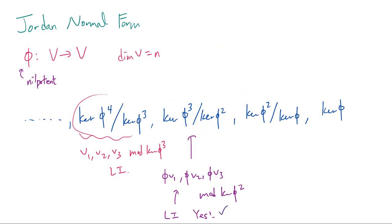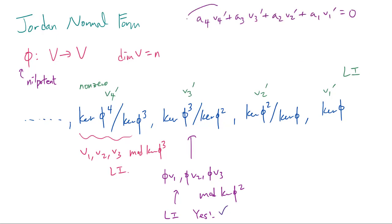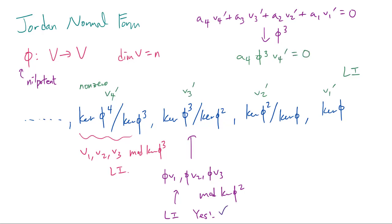Turning our attention back to these spaces: if I pick some non-zero vectors — say v4 prime from kernel of phi to the 4th modded by kernel of phi cubed, then v3 prime modded by kernel of phi squared from this space, then v2 prime from here and v1 prime from here — then I claim that these four vectors are actually linearly independent.